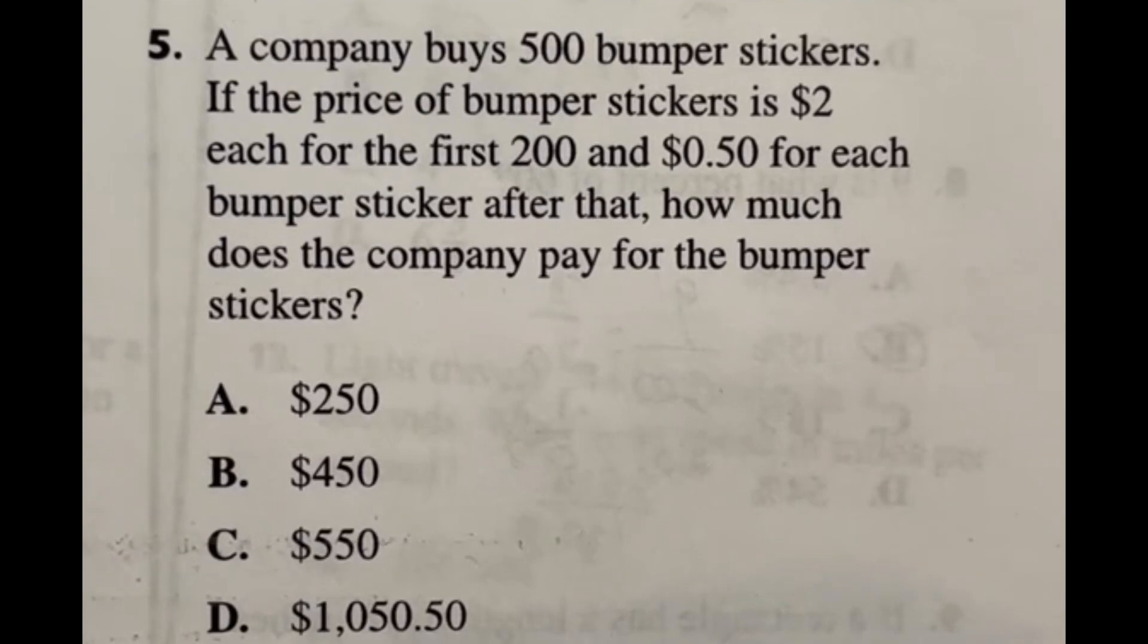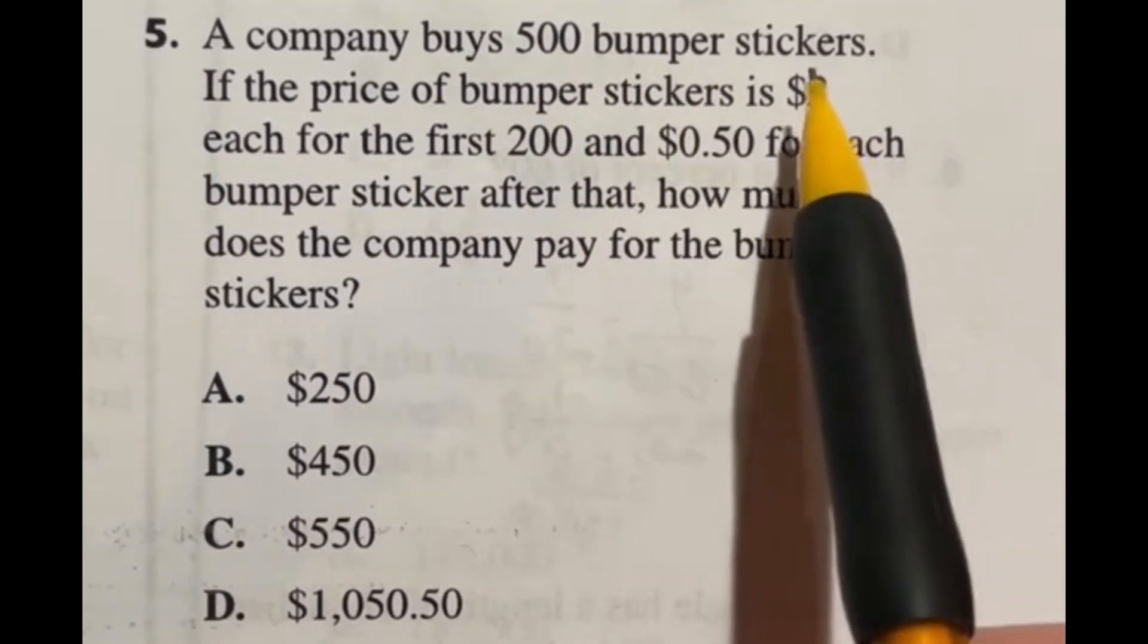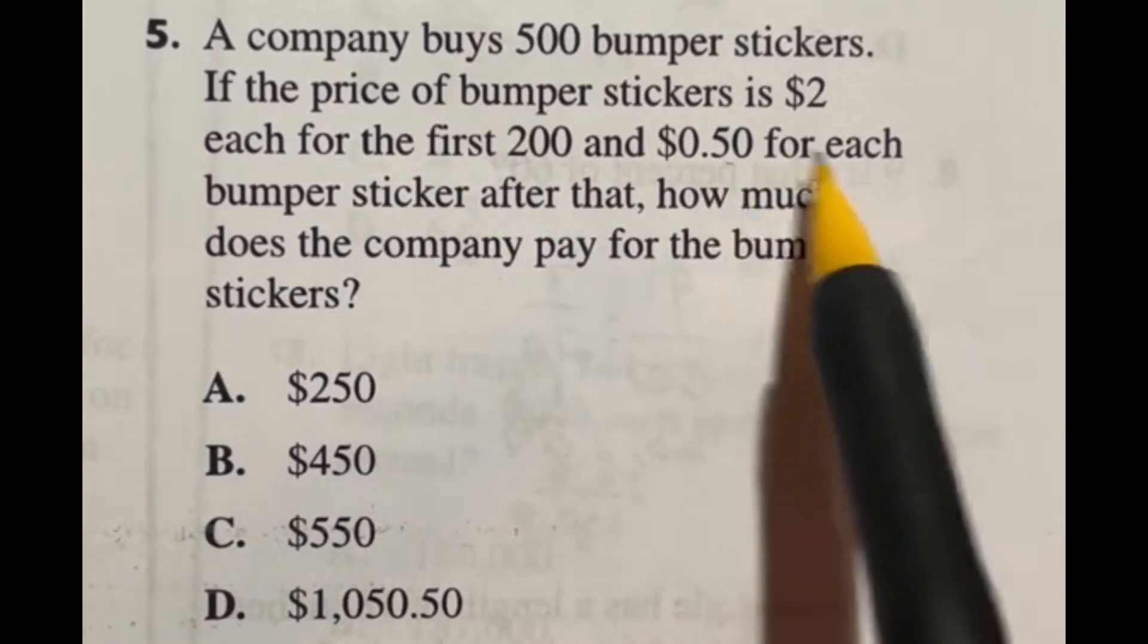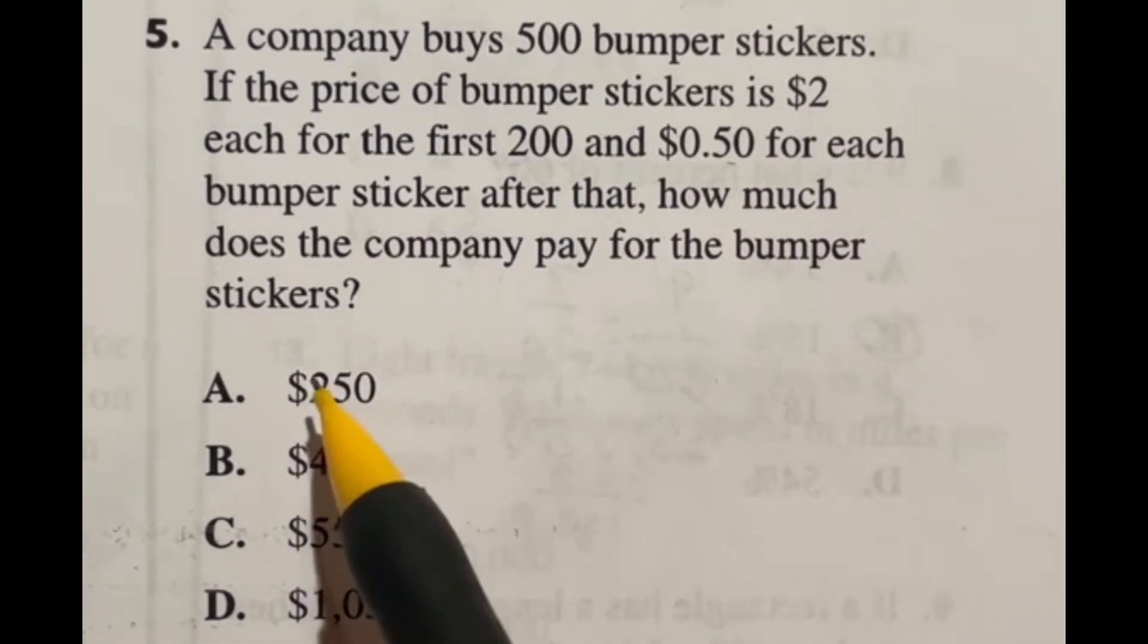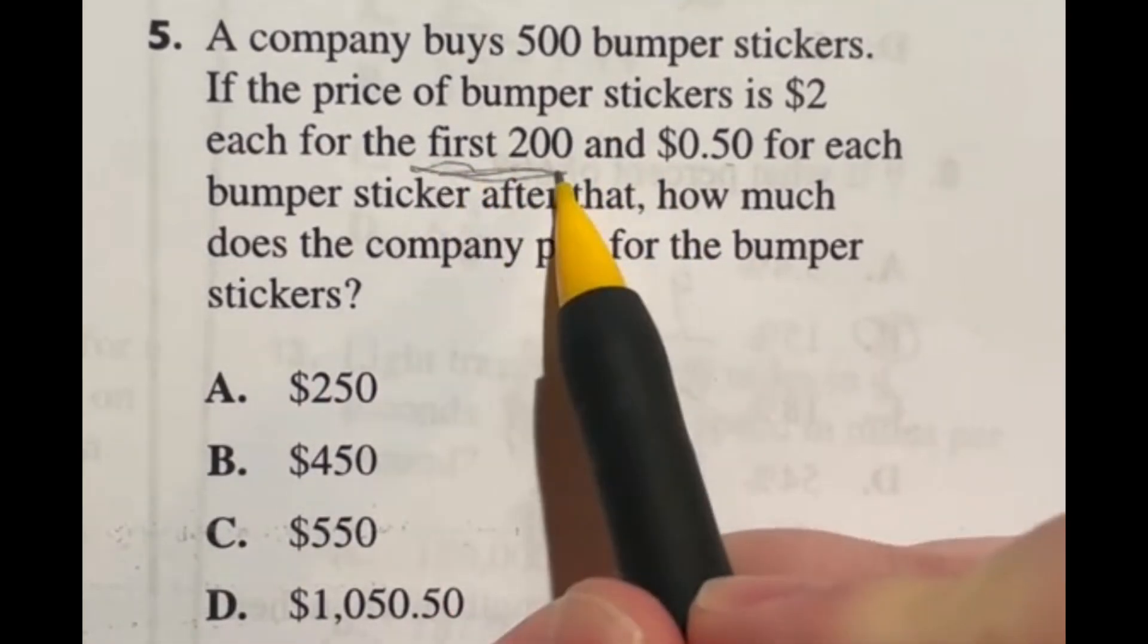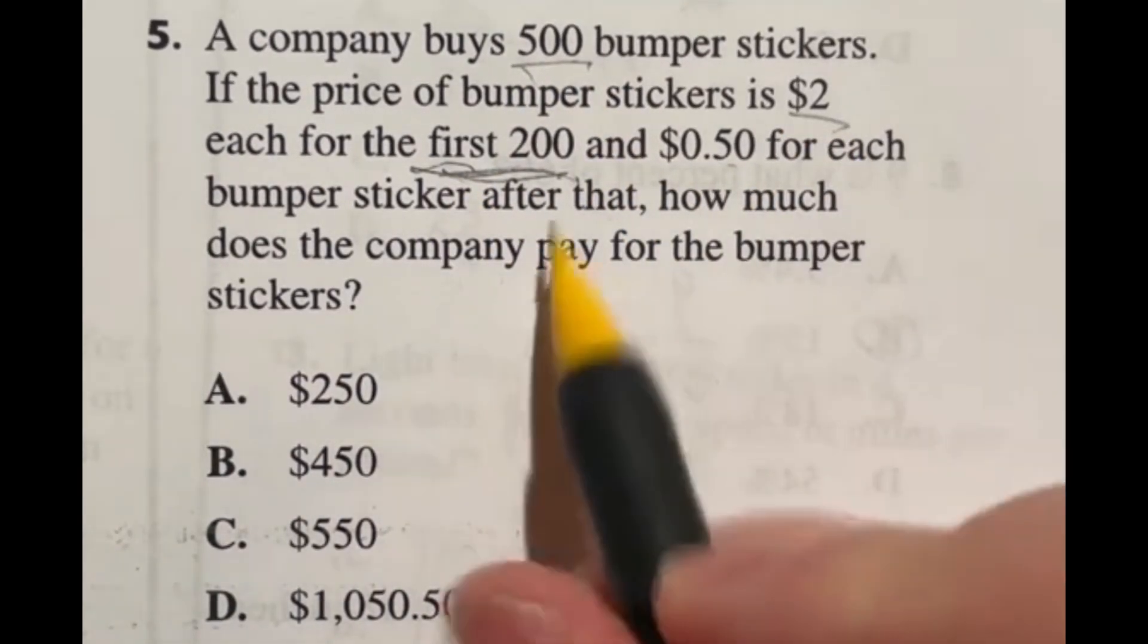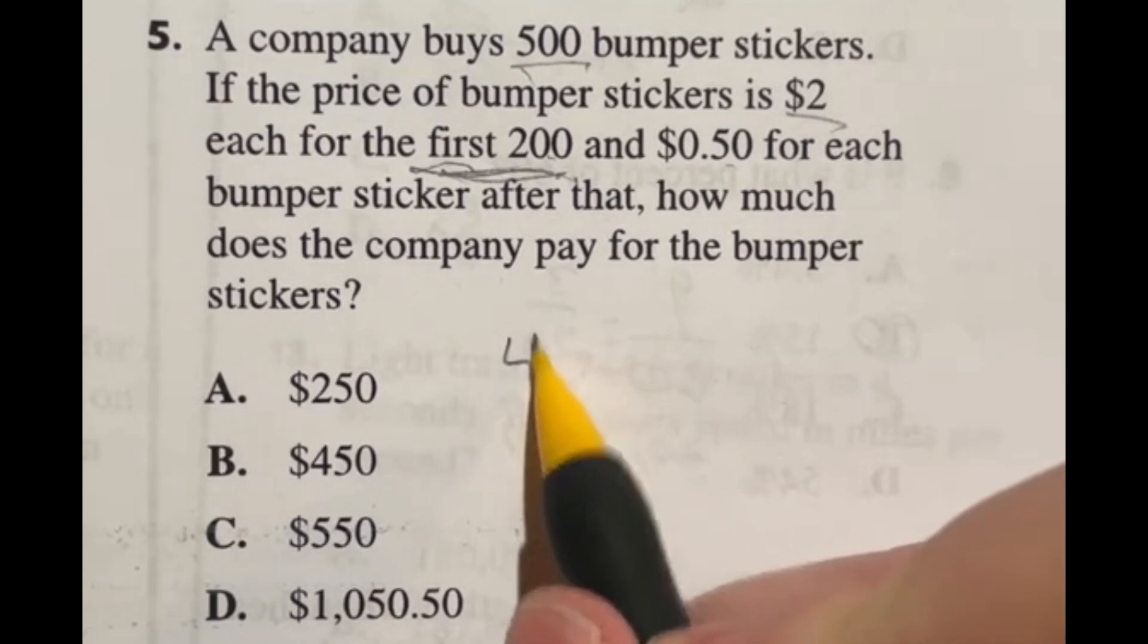So number five on the arithmetic reasoning portion of the ASVAB says that a company buys 500 bumper stickers. If the price of bumper stickers is $2 for the first 200 and 50 cents for each bumper sticker after that, how much does the company pay for the bumper stickers? So let's go ahead and break this down. First off, let's look at these first 200. So we have a total of 500, but the first 200 are $2 a piece. So that means we just do 200 times that two, because for $2 a piece, that's going to give us $400.